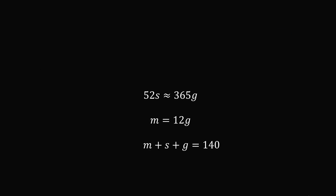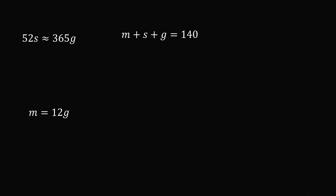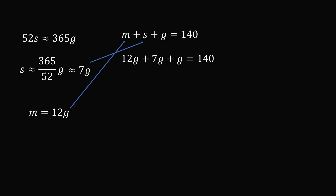Let's focus on these three equations. From 52s approximately equal to 365g, we solve that s is approximately equal to 365 divided by 52, multiplied by g — and that is approximately equal to 7g. So now we know s in terms of g and m in terms of g. Substituting m = 12g and s ≈ 7g, the equation becomes 12g plus 7g plus g equals 140. That gives us 20g equals 140, so g equals 7 years.